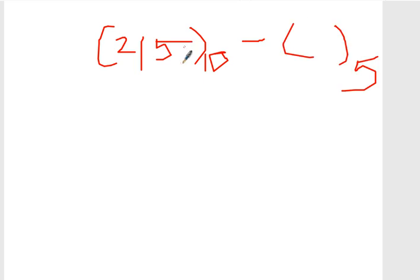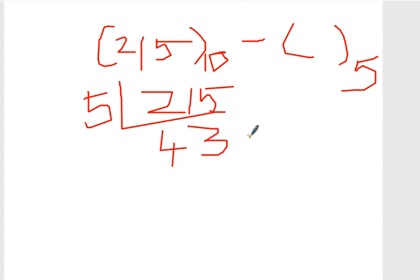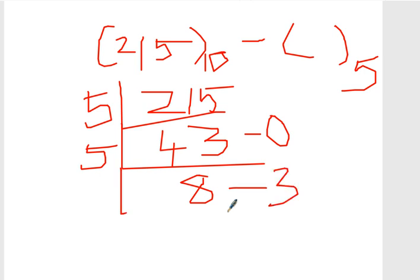Same again, divide 215 by 5. 5 into 21 is 4, that's 20, remainder 1. 5 into 15 is 3, so you'll get remainder 0. That gives us 43. Again divide this by 5. 5 into 43 is 8, that's 40, so remainder is 3.